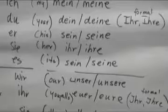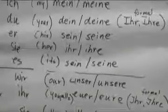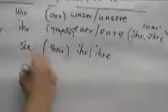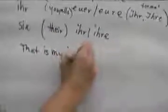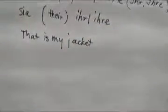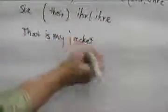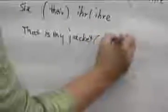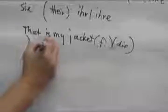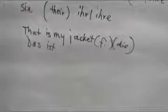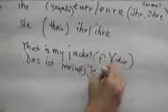Now let's see. Let's make some sentences so you can see how it's used. For example, if I say, that is my jacket. Now we know, or if you don't know, we have to look it up. Jacket is a feminine noun, right, or a die word. So, das ist, how do we say mein? It's up here. Mein, since it's feminine, we need to add an e. Meine Jacke.